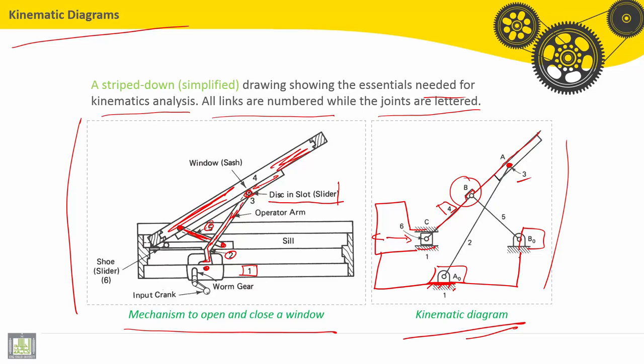The kinematic diagram shows part number six. You can see here that between four and six we have a revolute, and between six and one we have translational. So the kinematic diagram describes all functionalities and joints for the mechanism, but it is very simple and easy to draw.